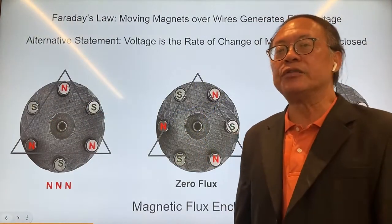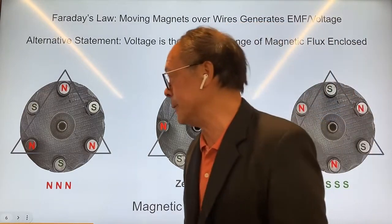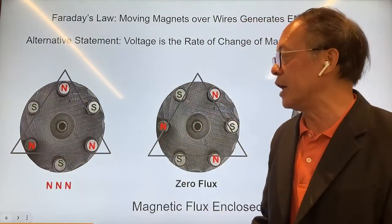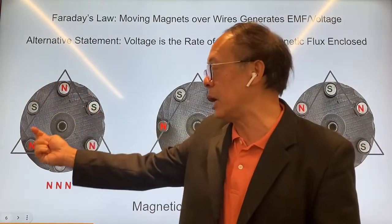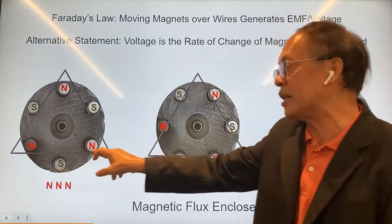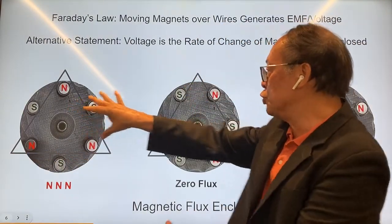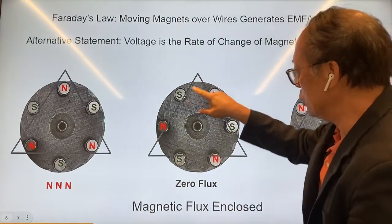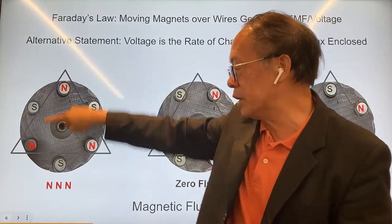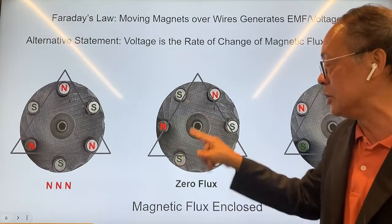Instead of looking at electricity generated by moving magnets over wires, we can have an alternative viewpoint proposed by Michael Faraday. Here, we have the triangle, and we have three north poles inside the triangle. According to Michael Faraday, there is magnetic field coming out of the north poles into the triangle. If you look at the total magnetic flux — the total amount of magnetism coming out of this triangle — as you turn the rotor, you would have no poles included inside this triangle, giving zero flux.